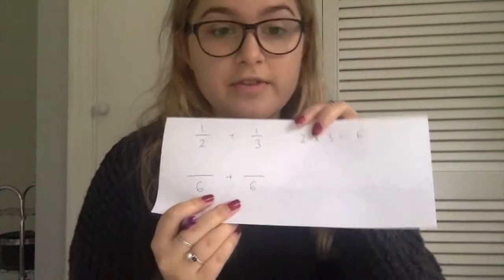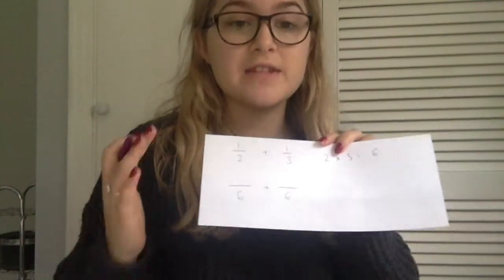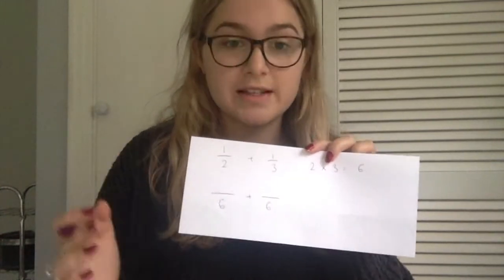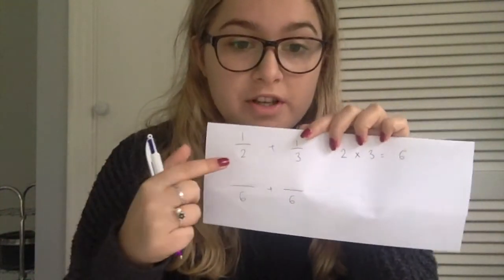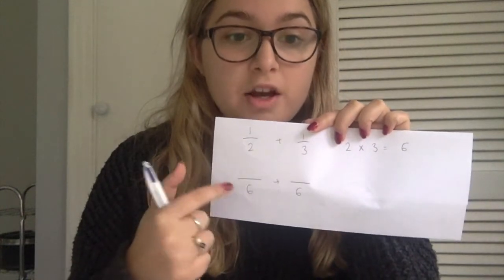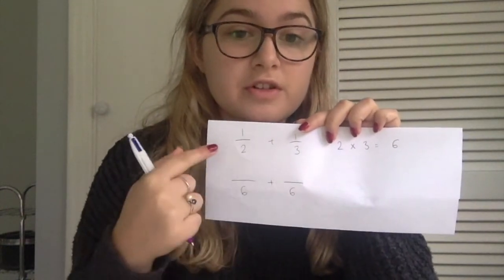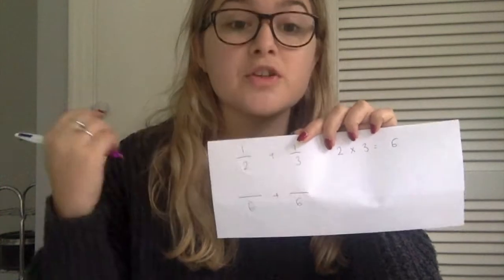So we've got two times three, which equals six. Then we've got to convert both fractions into numbers so they're over six, because you have to have a common denominator when adding fractions. To get two to six, we times it by three — so what do we do to the top number? We times it by three as well, because what you do to the bottom number, you have to do to the top number.